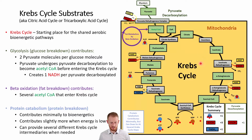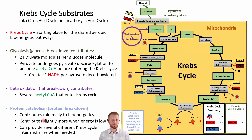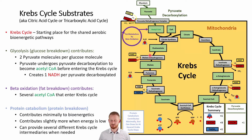Protein can also contribute to the Krebs cycle through protein catabolism. Protein is minimally involved in bioenergetics — our body tries to conserve protein to build structures like muscle and organs, not to make energy. When energy stores get low, protein contributes more, but even at its highest it may account for around 10% of total energy. Depending on the amino acid being broken down, protein catabolism can contribute to various steps, including directly into the acetyl-CoA step.